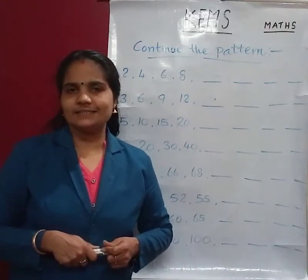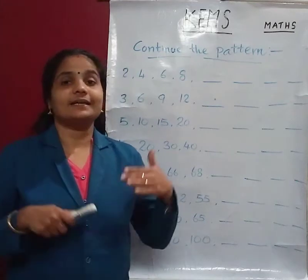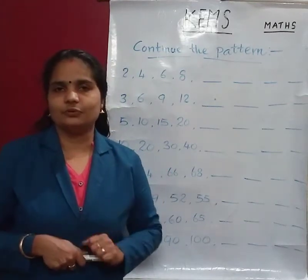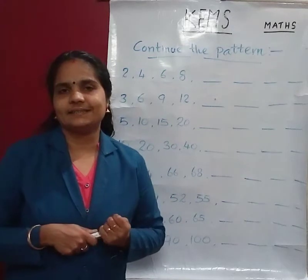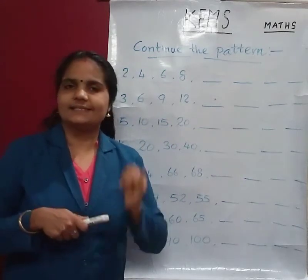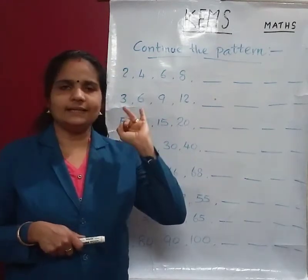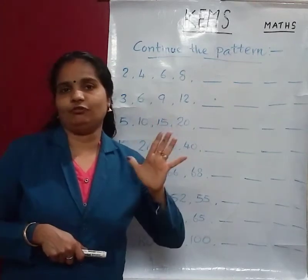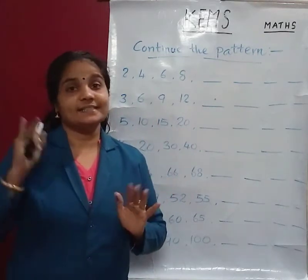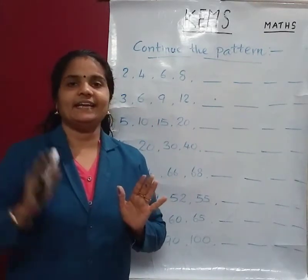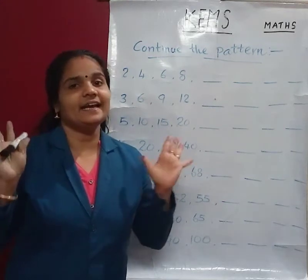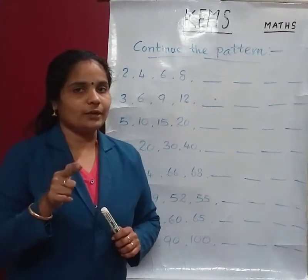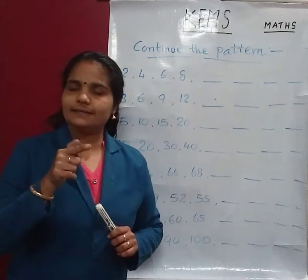You know that? Yes, counting by tens. All of you do counting by tens: 10, 20, 30, 40, 50, 60, 70, 80, 90, 100. That is counting by tens.